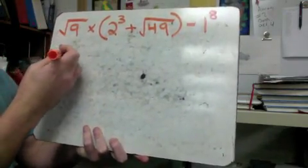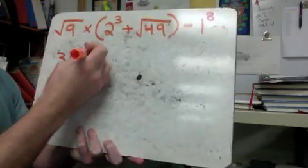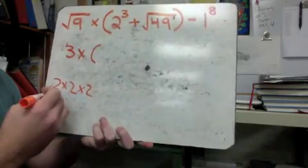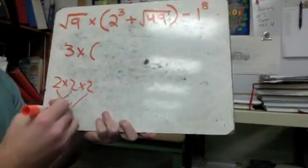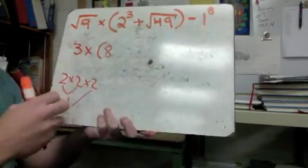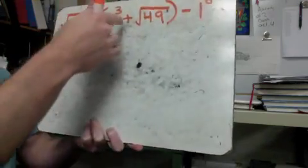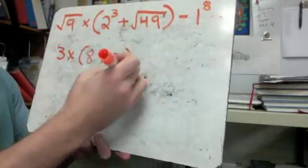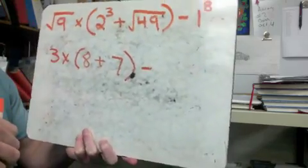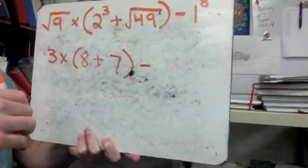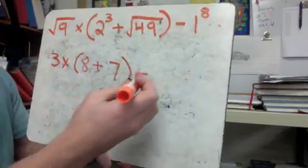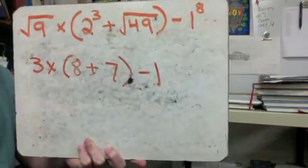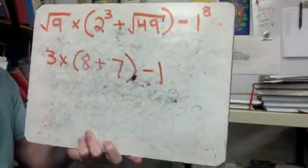The square root of 9 is 3. I'll keep everything else. 2 to the 3rd power — I like to write this out — 2 times 2 is 4, 4 times 2 is 8, so 2 to the 3rd power is 8. Plus 49 — the square root of 49 is 7 — close that parenthesis. And 1 to the 8th power is just 1 times 1 times 1 eight different times. Anytime you multiply 1 together, it's still going to be 1. So now if you look at the problem, it is pretty close to what we've seen before. Now we just have to follow our order of operations.